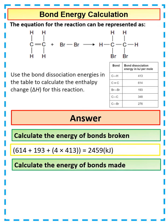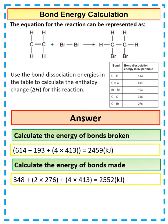Next, we're going to calculate the energy of the bonds being made. So we've got 1, 2, 3, 4 lots of CH bonds. We've got 1 C double bond C. And we've got 2 lots of C single bond Br. So that comes out as 2,552.